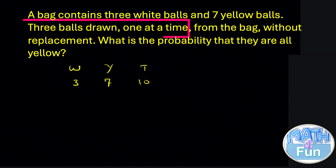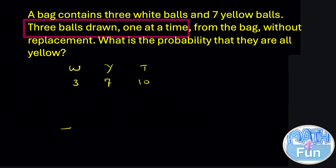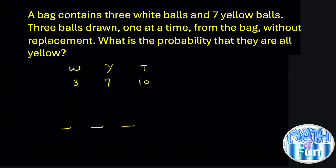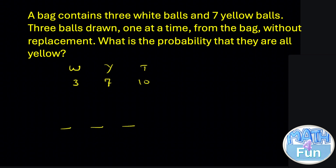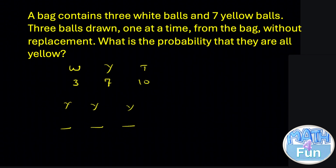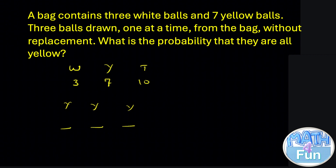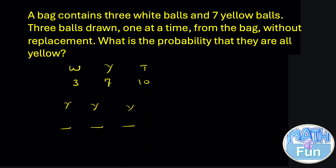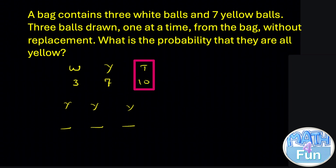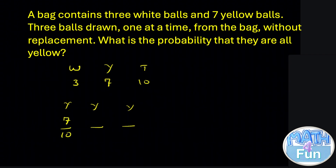They say three balls are drawn one at a time, so we take the first ball, then the second, then the third. For the probability that all are yellow — the first ball we need to be yellow, the second yellow, and the third yellow. If we take one ball from the box, the probability of getting a yellow ball is 7 out of 10, since there are 7 yellow balls and 10 total.